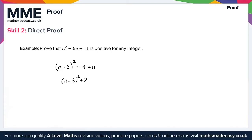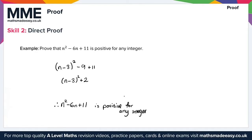Simplifying gives us (n minus 3) all squared plus 2, since minus 9 plus 11 equals plus 2. Now, (n minus 3) all squared will always be positive because it's a square number. Adding 2 to this positive value means the result will also always be positive. Therefore, n squared minus 6n plus 11 is positive for any integer. That gives us everything for skill 2 on direct proof.